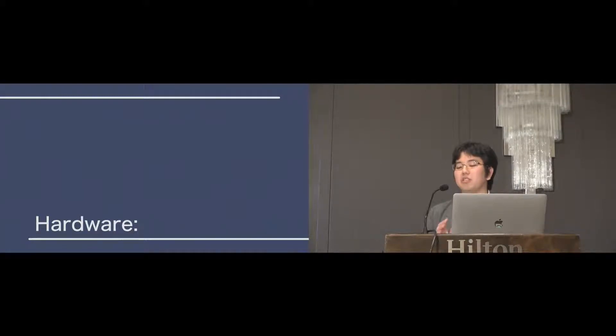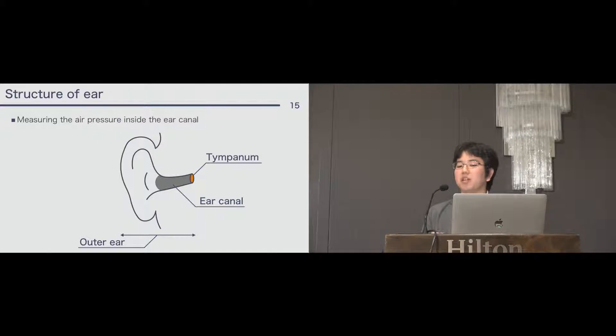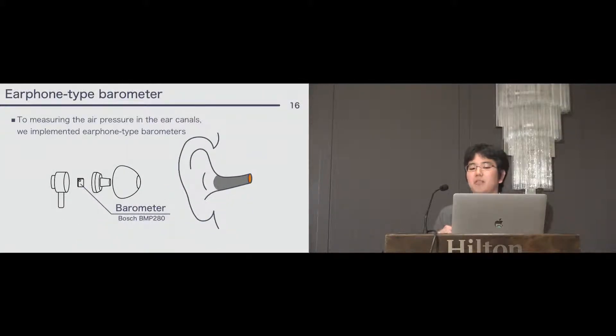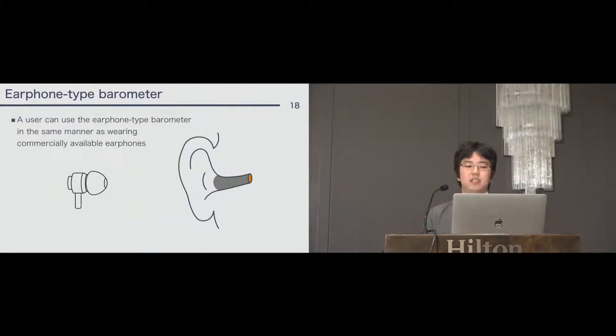I will talk about the hardware. This is a structure of outer ear, and we measured the air pressure inside the ear canal. We implemented earphone-type barometers. And we embedded a tiny barometer in a commercially available canal-type earphone. The barometer is Bosch BMP280, and the commercial canal-type earphone is Panasonic RPHAE260.